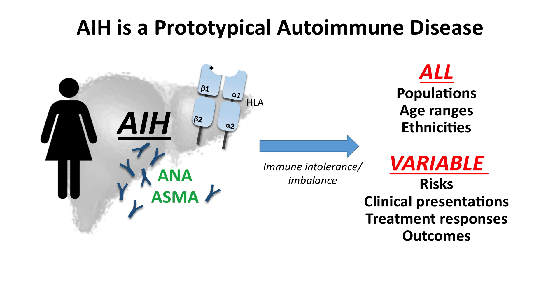Autoimmune hepatitis, as many of you know, is a prototypical autoimmune liver disease. One reason we know this is it's characterized by very strict and significant relationships with what's called the human leukocyte antigen — a gene we'll talk about — but also a significant female predominance of anywhere between 80 and 90 percent, and finally the presence of autoantibodies. Many of you are familiar with the anti-smooth muscle antibody as well as the anti-neutrophil antibody. It is some interaction and culmination of these factors that leads to something wrong with your immune system — you are intolerant to yourself, specifically your liver.